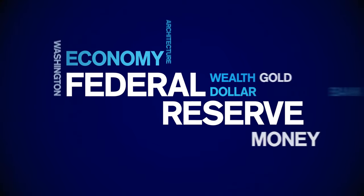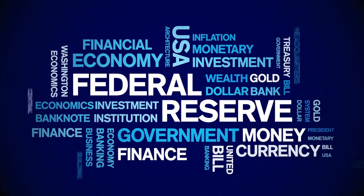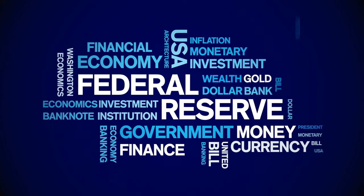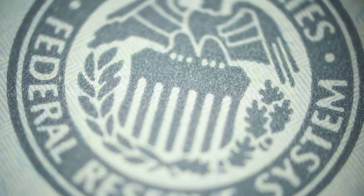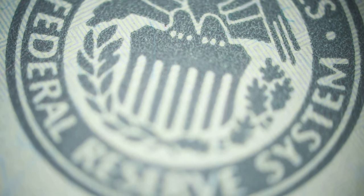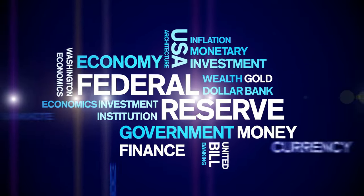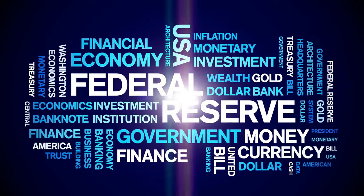The Federal Reserve has three primary methods to control interest rates: open market operations, the discount rate, and reserve requirements. Open market operations is the Fed's most frequently used tool, involving buying or selling government securities in the open market. When the Fed buys securities, it injects money into the banking system, lowering the Federal Funds Rate — like a balloon filling with air. When it sells securities, it pulls money out, raising the Federal Funds Rate, like letting air out of the balloon.